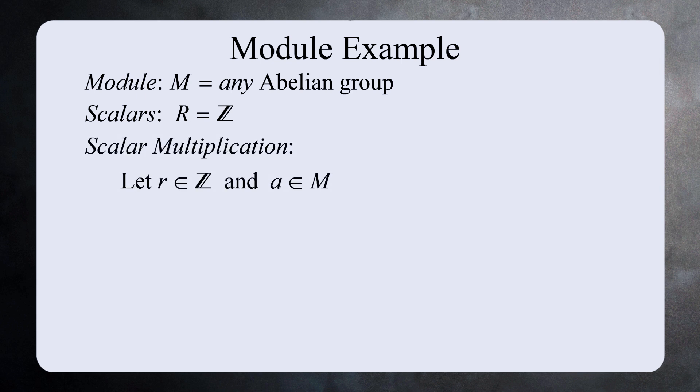For our first example, let M be any abelian group. For the ring of scalars, let's choose the integers Z. Here is how we define scalar multiplication. If R is positive, then we define R times A to be A plus A on and on R times. If R is zero, then zero times A equals zero. Be careful here. This zero is from the scalar ring Z, whereas this zero is the identity element in the group M.